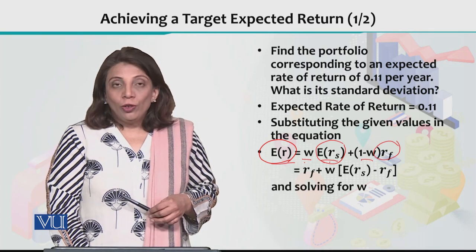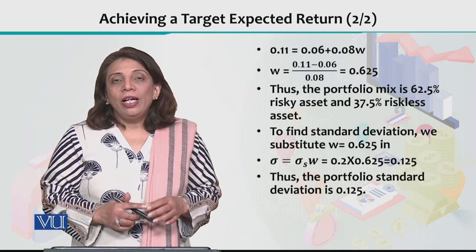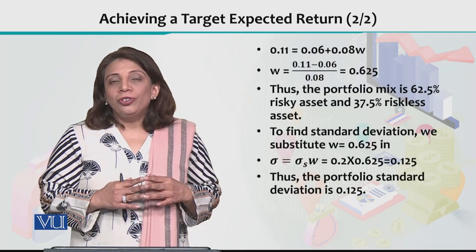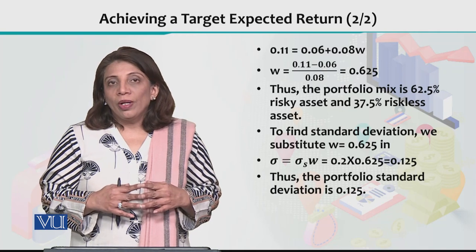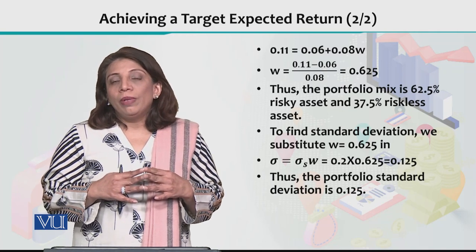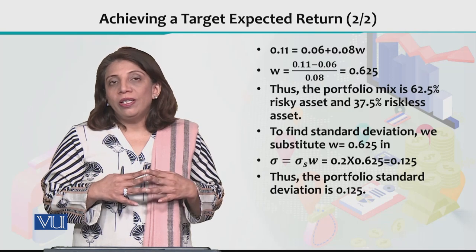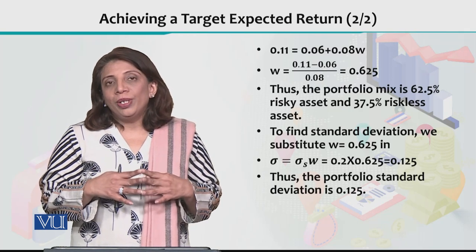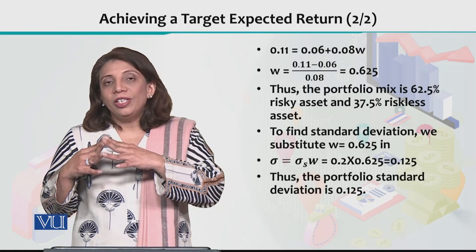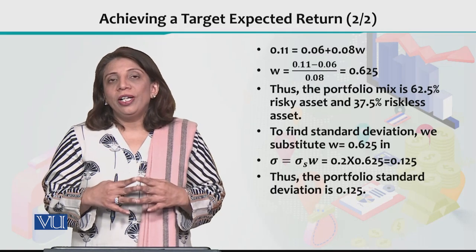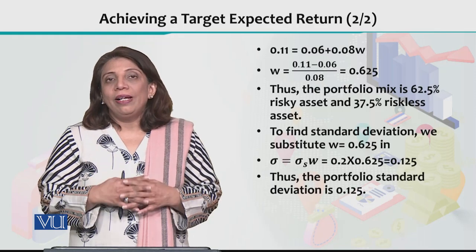Suppose I want to know: if I want to generate an expected rate of return of 11%, how much money should I invest in the risky asset and how much in the risk-free asset in order to generate an expected rate of return of 11%?